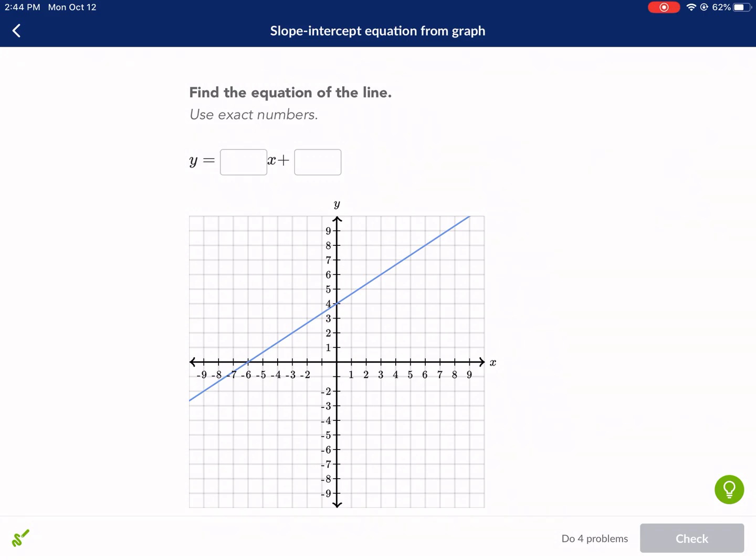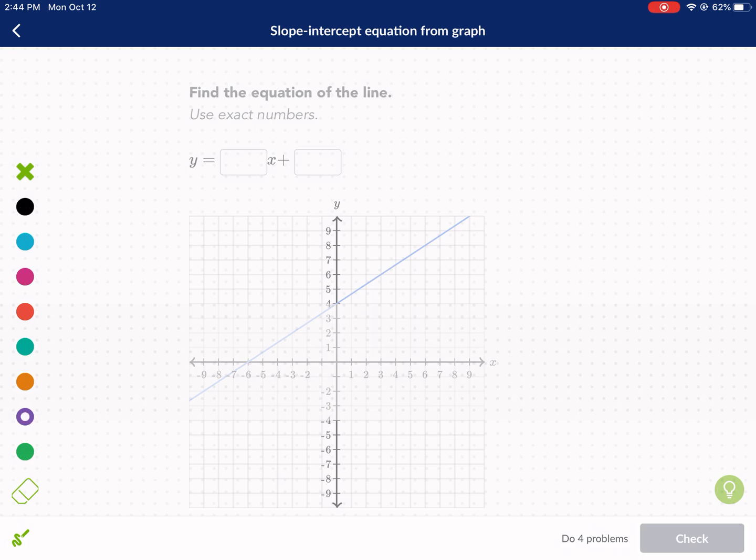Welcome everybody to West Explains Best. Today we're going to be doing a Khan Academy tutorial on slope-intercept equation from graph. Very appropriate title because that's exactly what we're doing. So it asks us to find the equation of the line, use exact numbers.